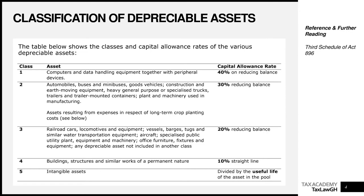Class two contains automobiles, buses and minibuses, goods vehicles, construction and earth-moving equipment, heavy general-purpose or specialized trucks, trailers and trailer-mounted containers, and plants and machinery used in manufacturing. It also includes assets arising from expenses in respect of long-term crop planting costs. Class two assets are granted capital allowance at a rate of 30% on a reducing balance basis.